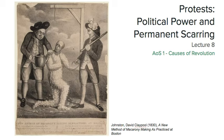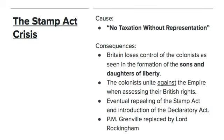Last lesson we looked at the Stamp Act crisis specifically, and we found out that the main cause of that crisis is the idea of no taxation without representation. The British lost control over the colonists during this time, which was specifically seen in the formation of the Sons and Daughters of Liberty movement. We also see that the colonists finally united against the Empire for the first time, starting to assert their British rights and questioning the role of the king.